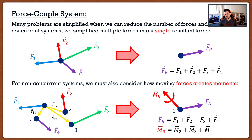Typically in exams, they give you four forces and ask for the resultant force and moment about, say, point one. We know force one won't create a moment, so that's one cross product eliminated. They'll typically have two other forces as couples, so you only do the cross product once, and then one additional force that requires a cross product. It's very important to know how moments are created, so you know the best approach to quickly find all the moment components.